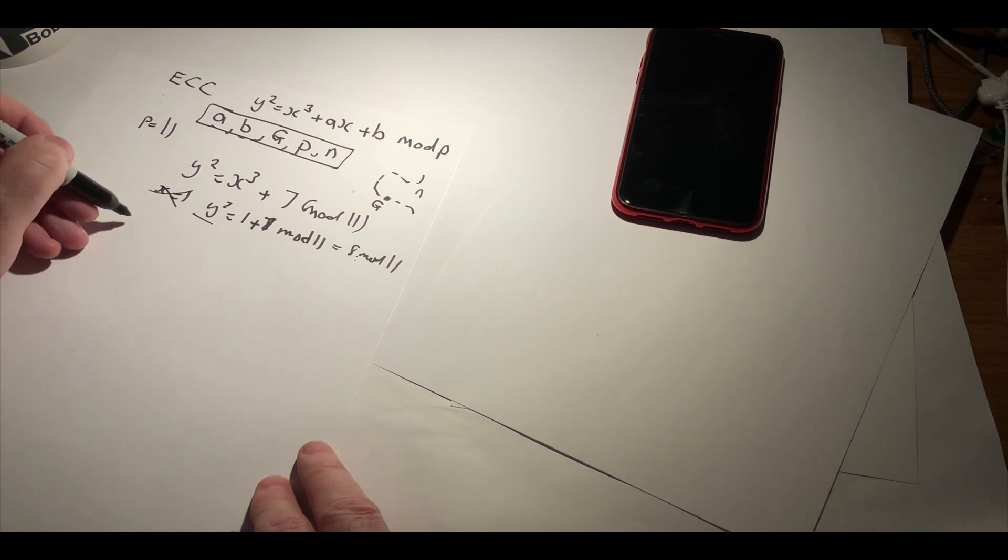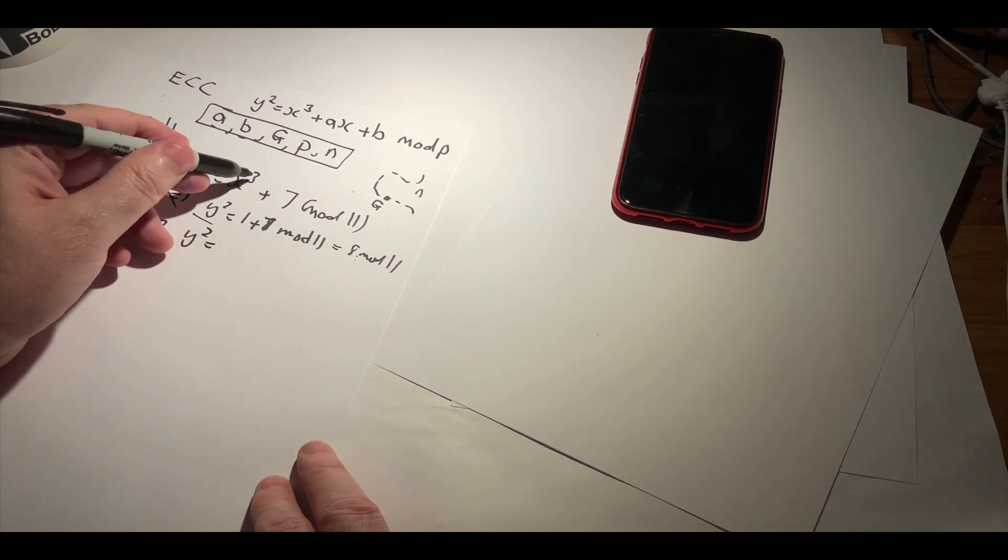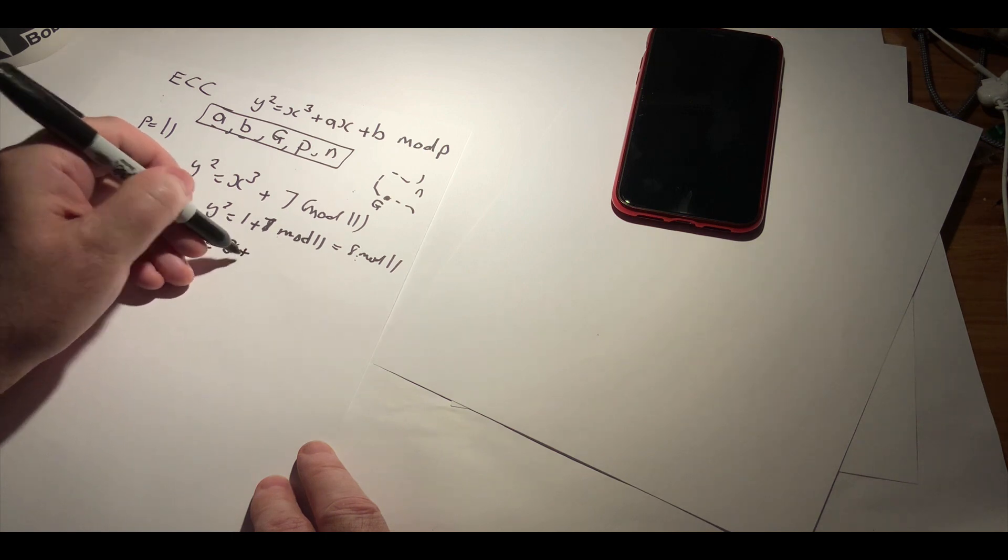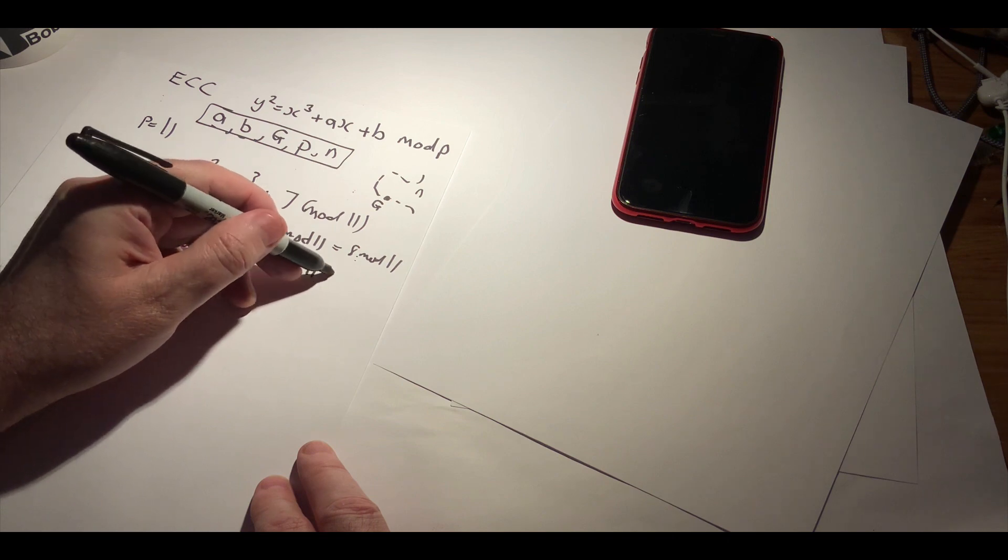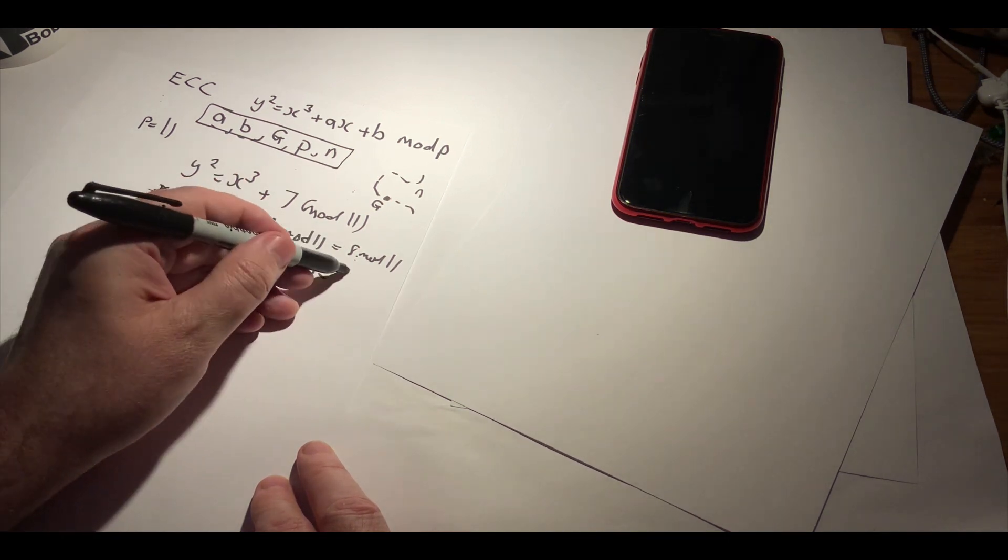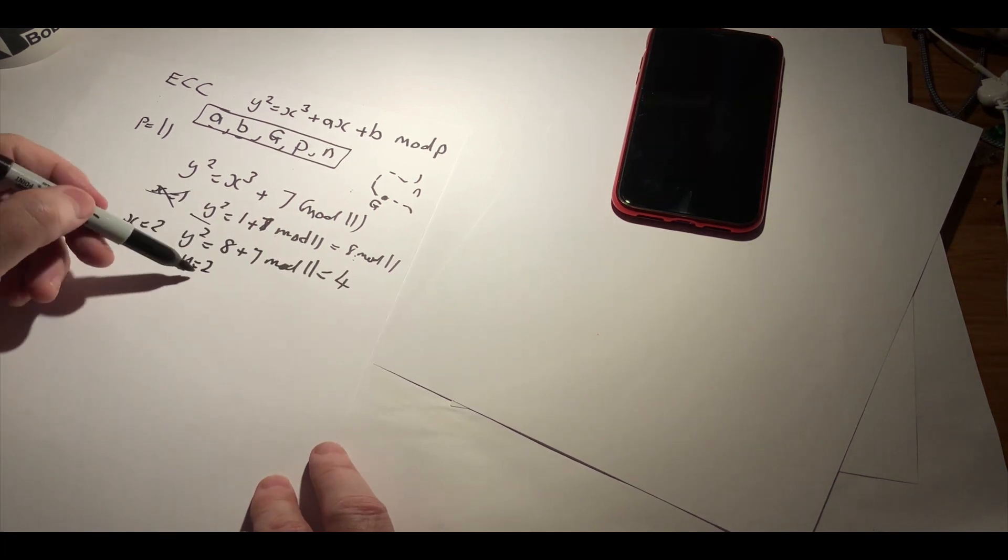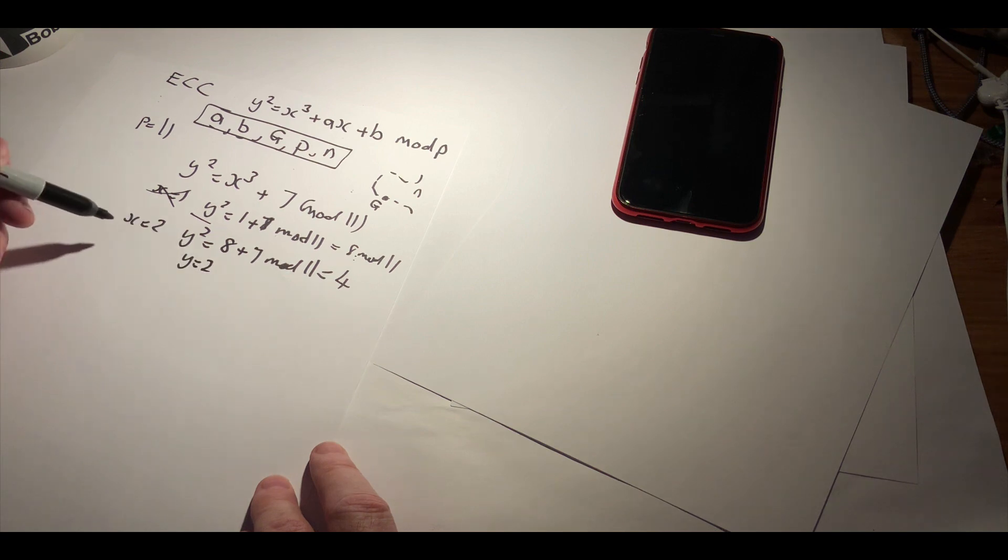If we now try x equal to 2, so y squared is equal to 2 times 2 times 2, which is 8, plus 7 mod 11, so that goes 15 mod 11, which gives us 4. And that's quite easy because that's 2 squared is equal to 4. So we've found the quadratic residue of this.